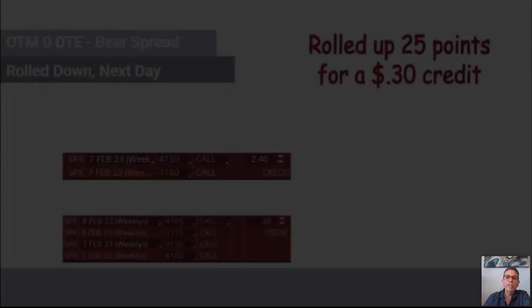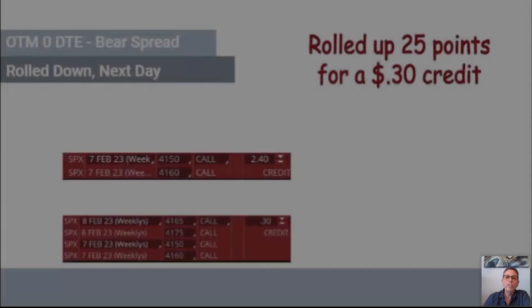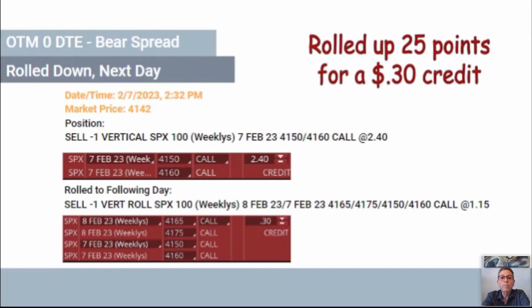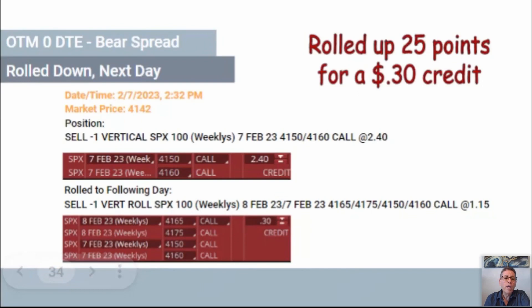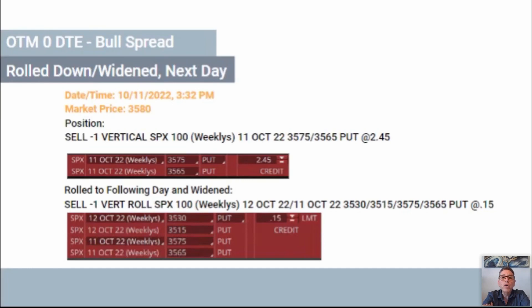Bear spread again: we're rolling and changing the strikes. In order to get the 30-cent credit, it only gives 15 points of distance — not 25. Now in a bull spread, we're rolling down and widening the trade — widening it from 3575 down to 3530. That is quite a distance from the market and you still collect a 15-cent credit. So if you plan to roll the trade, the best way to get more distance is to widen it by one increment.